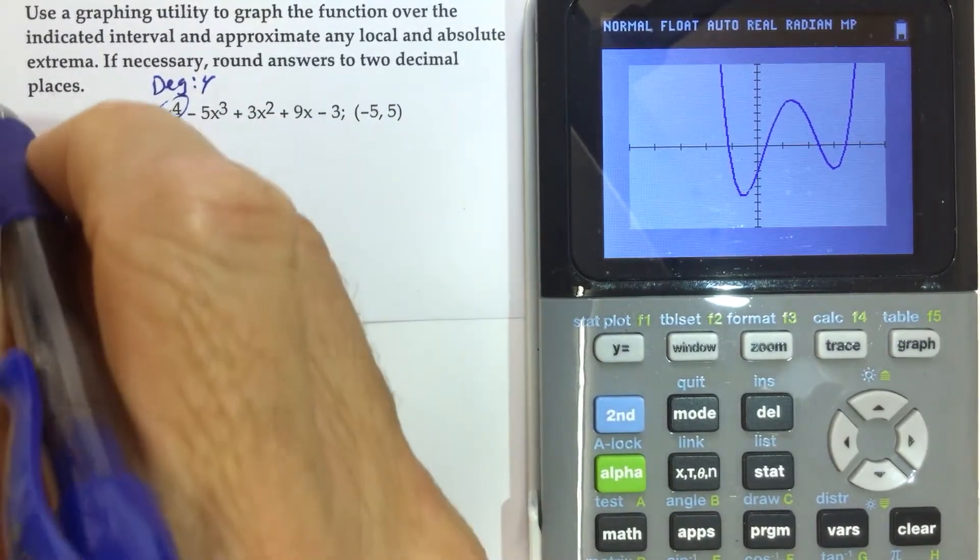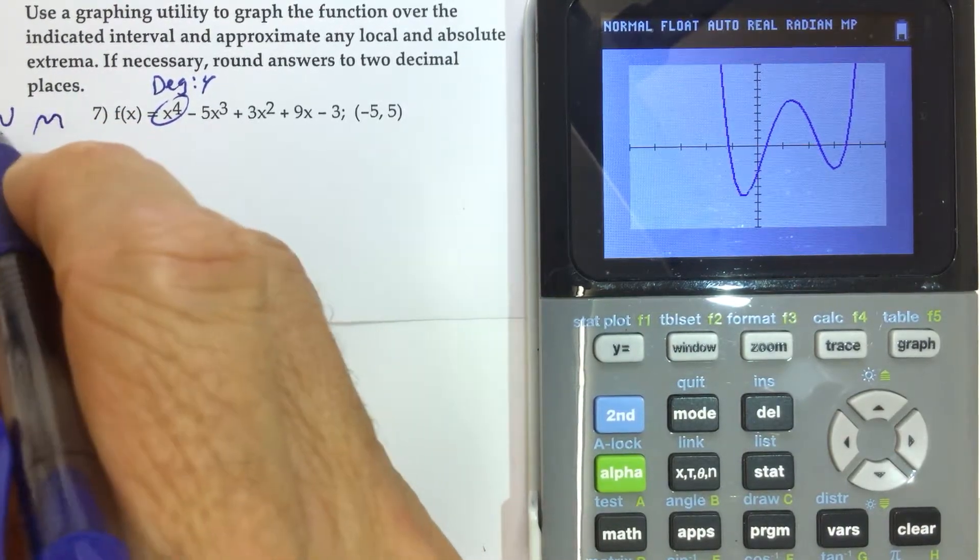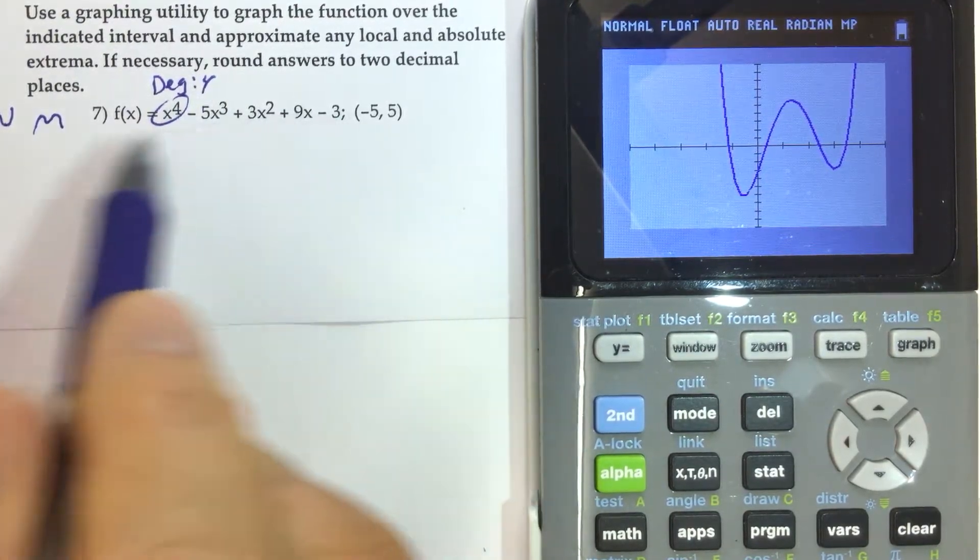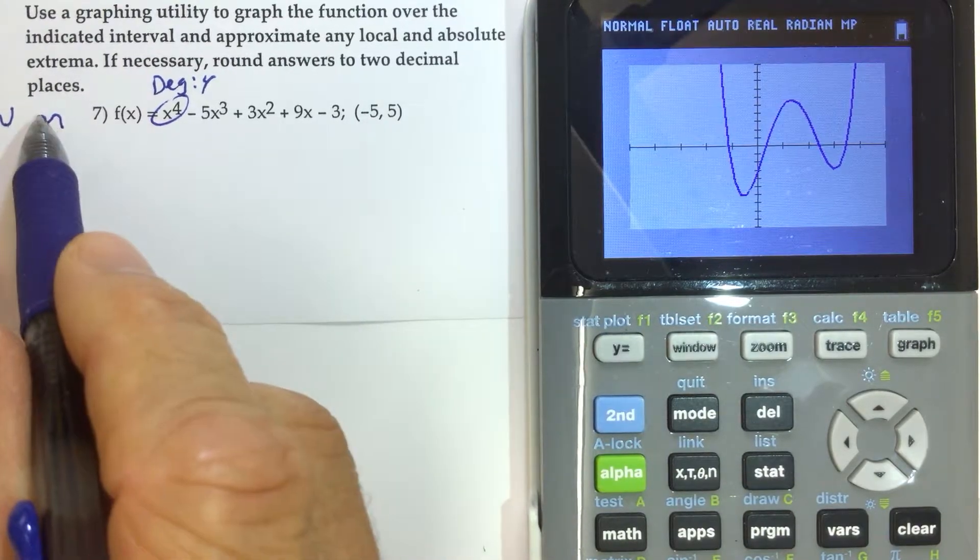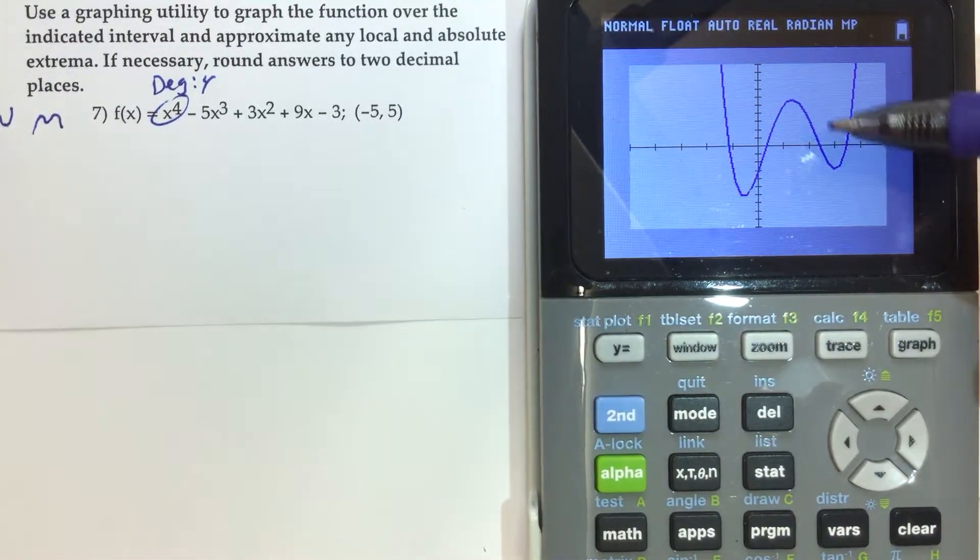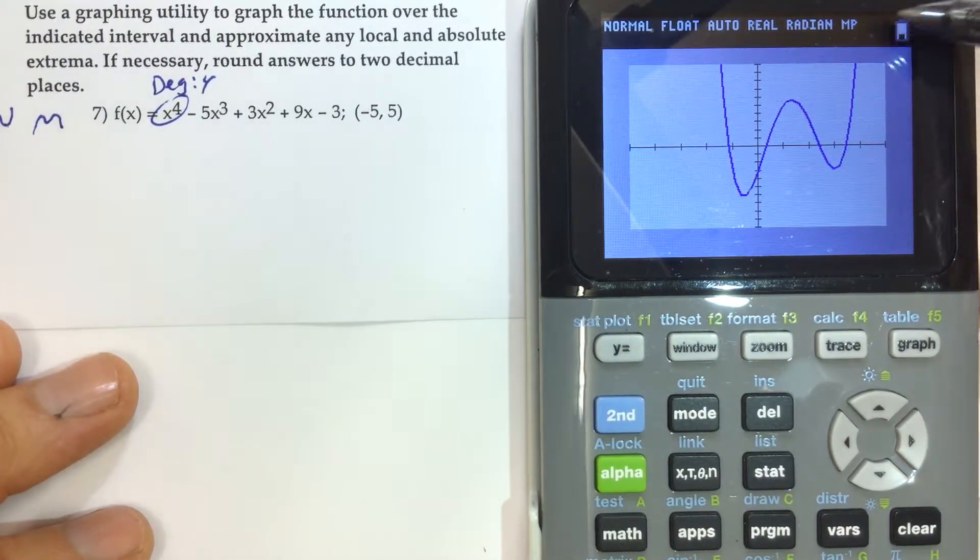We know that degrees of 4 either open up or open down. We also should remember that if the degree is 4 of the polynomial, that at most it would have three bumps. And that's a really important thing to understand too, because when you look at the screen of the calculator, you notice this already has three bumps, and we know it cannot come back down.